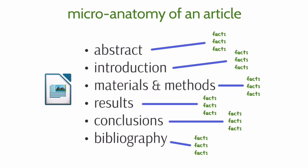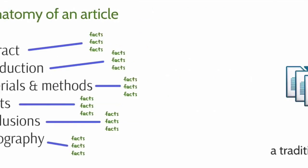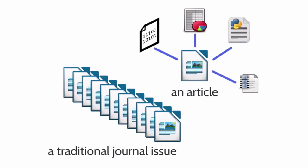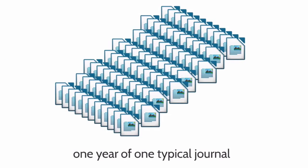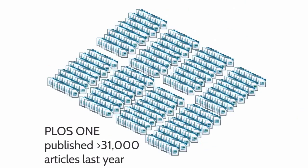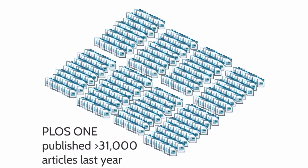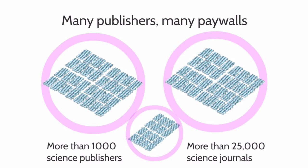Articles contain facts. They also may have associated supplementary materials. A journal contains many articles. Some journals publish a vast number of articles. There are many journals, many of which have restrictions. So at the end of the day there are billions of facts trapped in a galaxy of articles.